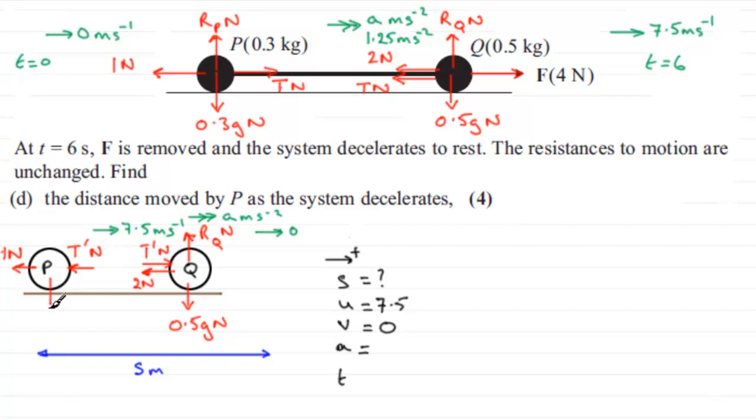We've got the weight acting on P, which is going to be 0.3 g Newtons. Because the mass is 0.3 kilograms. And there'll be a reaction up here, which we'll call RP, RP Newtons. So, again, we've got T dash acting on P, a bit of a problem if we're trying to find acceleration.